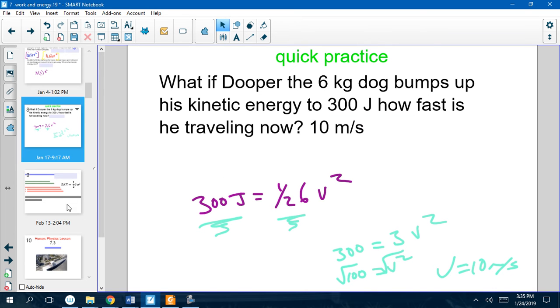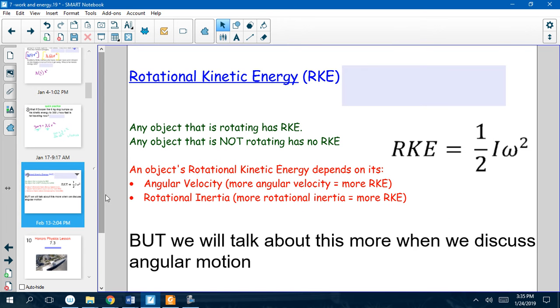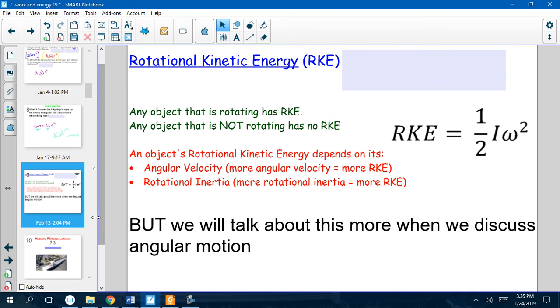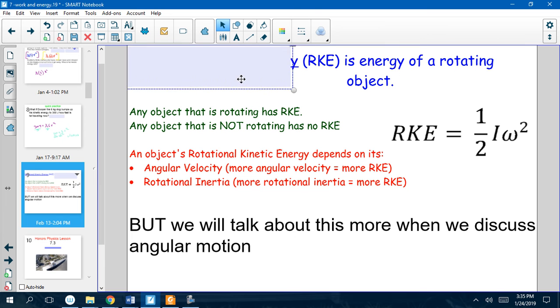Now, there's another type of kinetic energy that I'm going to mention now and come back to it when we talk about angular motion, and that's rotational kinetic energy. So, whenever something is rotating, we have something called rotational kinetic energy. And if it's not rotating, then we don't have rotational kinetic energy.